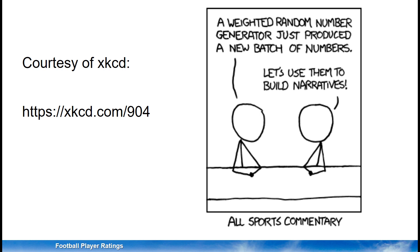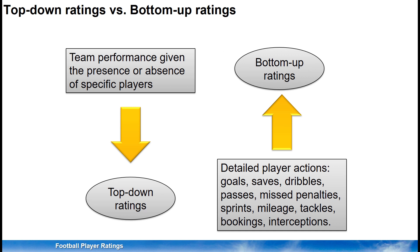A bad player on a good team can more easily get a good plus-minus rating than a good VAEP rating. So if I had access to event data and was asked to create better bottom-up ratings, I would find a way to compensate for the difference in quality between teams. Then I think there should be a more even playing field, and perhaps bottom-up ratings would outperform plus-minus ratings, as they really should.